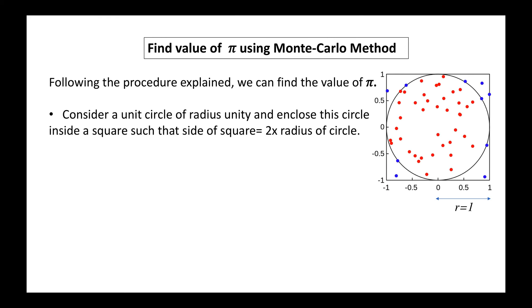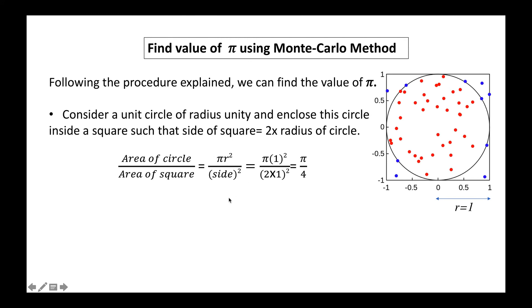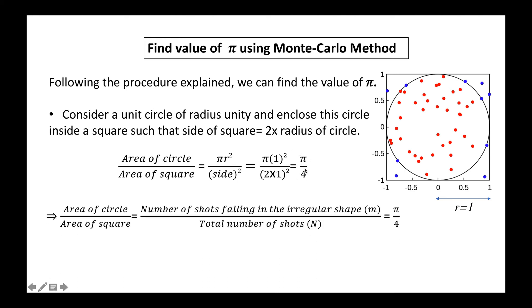Consider a unit circle of radius one and enclose the circle inside a square such that the side of the square equals two times the radius. The area of the circle is pi*r² and the area of the square is side². Taking the ratio for a unit circle where radius is one and side is two, the equation reduces to pi/4. The ratio of area of circle to area of square equals the number of shots falling within the circle (m) divided by total shots fired (n). Therefore, m/n equals pi/4, which gives pi = 4*m/n.